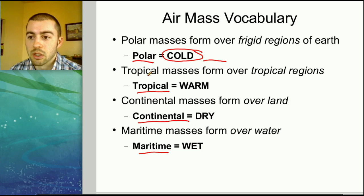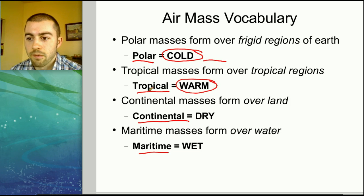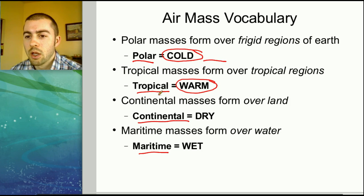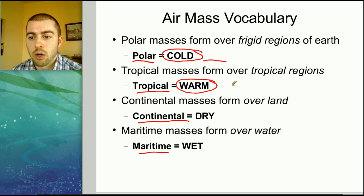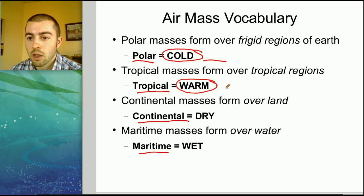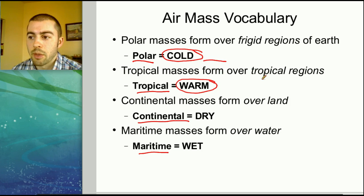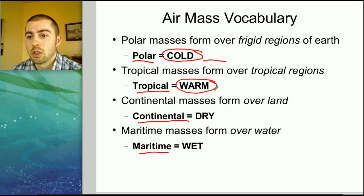A tropical air mass would be the opposite of a polar air mass — it's going to be warm. These form in the tropical regions of Earth, down closer to the equator, like the Caribbean, parts of South America, and Central America. Those areas get more direct sunlight being closer to the equator, so tropical air masses bring warm air. For the United States, these would come up from the south.